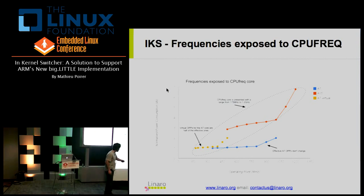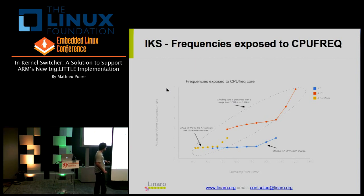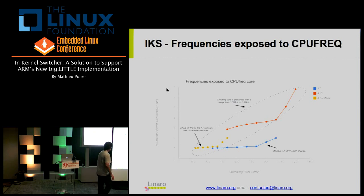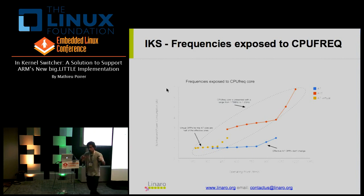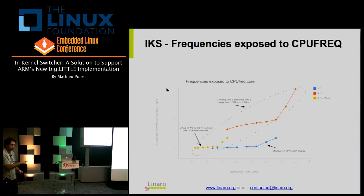Looking at this another way: the real operating points and power for each cluster are shown separately — the blue line for the A7 and the red line for the A15. When the switcher is enabled, what's presented to the kernel is one long contiguous range of operating points. In the middle there's a gap — a bridge — where we transition from the small core to the big core.